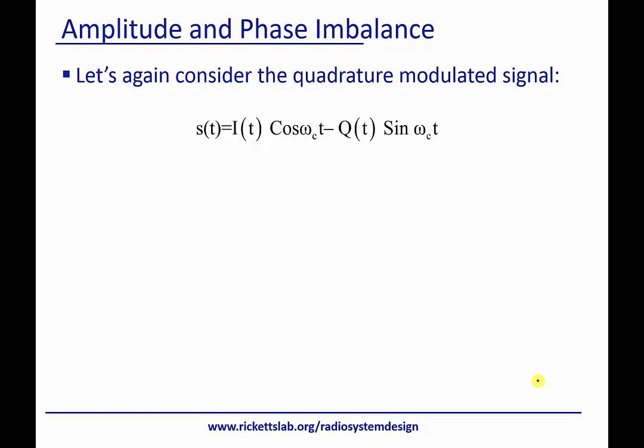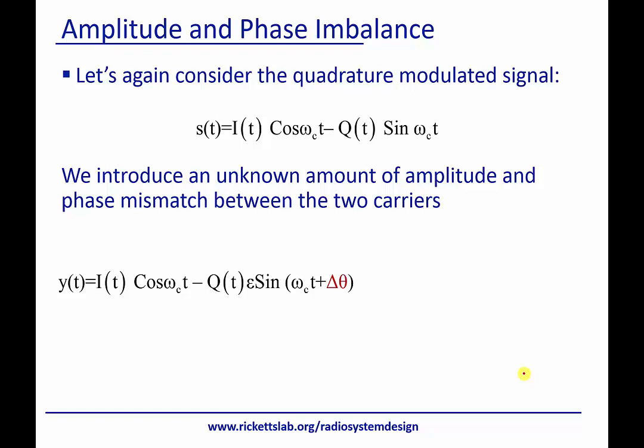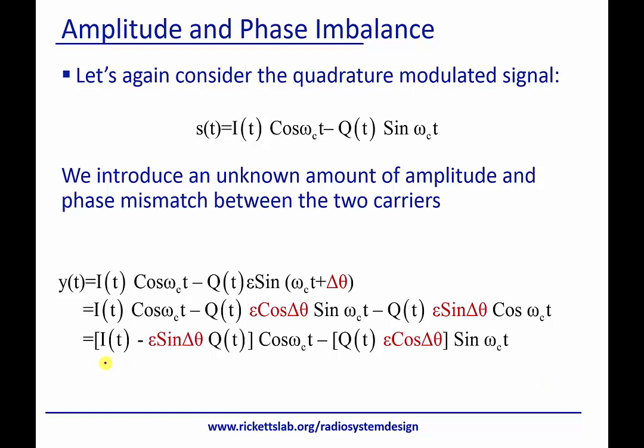So let's look at our quadrature signal and see what happens when we have amplitude and phase error in our two local oscillators. We're going to introduce an unknown amplitude, epsilon, and an unknown phase, delta-theta. We're going to break this out just like we did before into the identities, and if you work through the math, you can see we suddenly now have a prefactor for the sine and cosine. Over here, this looks just like a constant, but if you look further, we actually have this signal and we've got a Q of t.